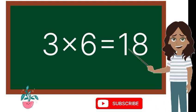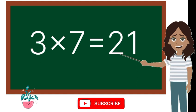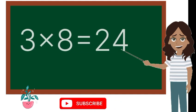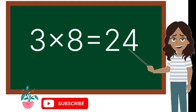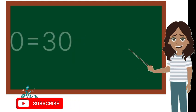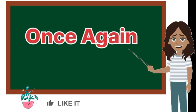3 6s are 18, 3 7s are 21, 3 8s are 24, 3 9s are 27, 3 10s are 30.